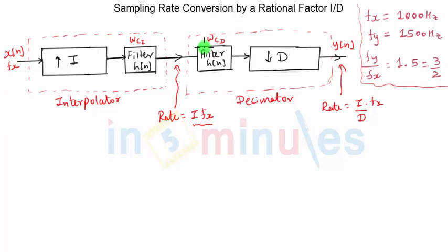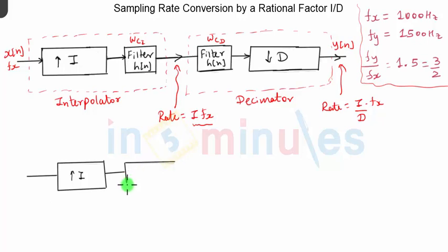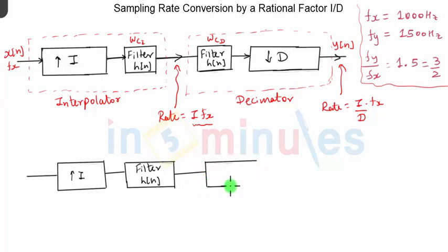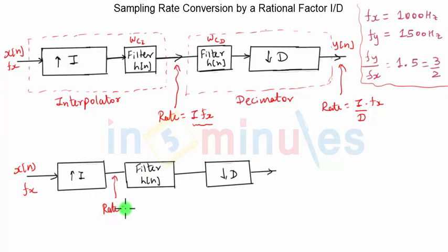We will now draw the practical block diagram used for conversion by a rational factor. First there is an upsampling block, whose output is given to a common filter with impulse response h(n). The output of that filter is given to a decimator block. This filter handles both the anti-imaging and anti-aliasing operations — both tasks are performed by this single filter alone.